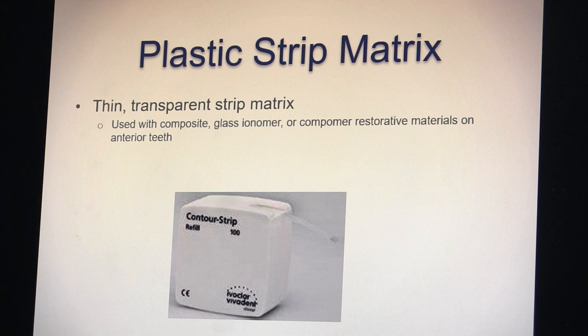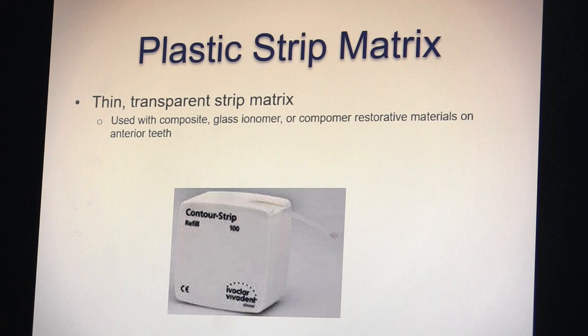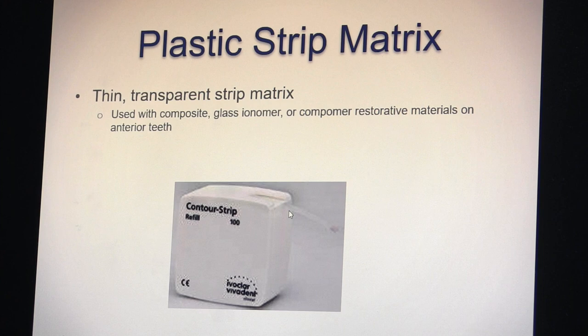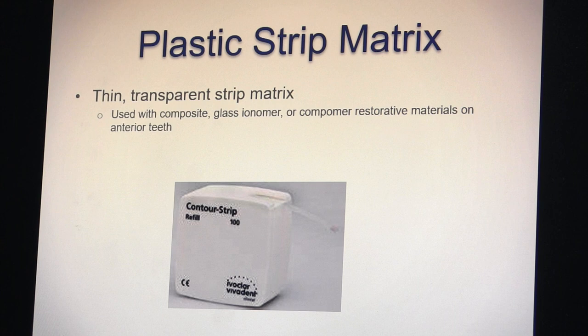A plastic matrix strip is used for anterior (front) teeth with composite. It is a clear strip that comes in a container and is cut to the length needed. It is placed between the teeth, the filling material placed and folded over, then light-cured to harden. Tofflemire and metal matrix bands are not used for anterior teeth — the clear plastic strip is used instead.